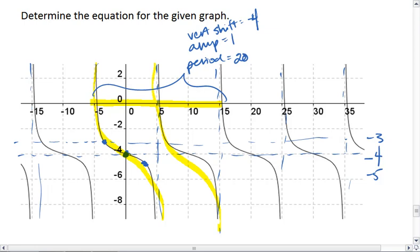Notice though, because I have going from left to right, it goes up to down, this means we're going to work with a negative tangent. So we have negative tangent.